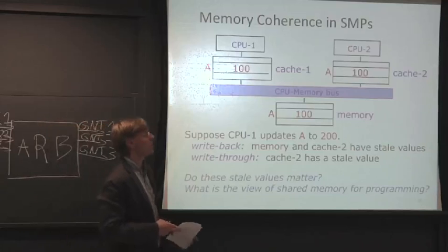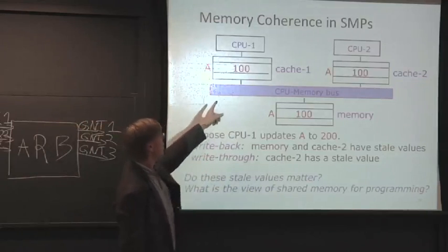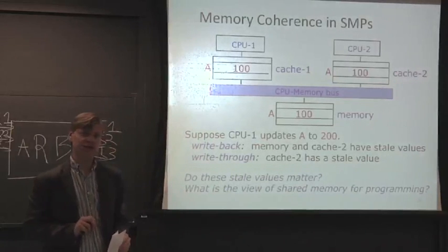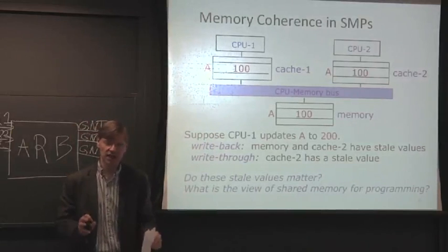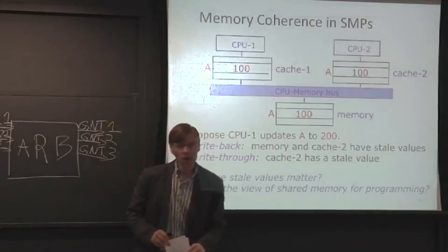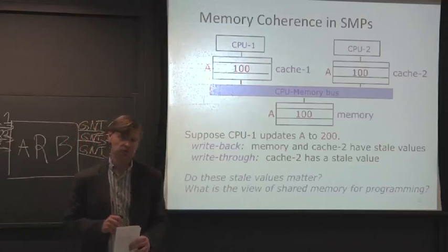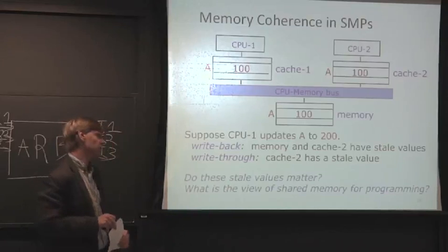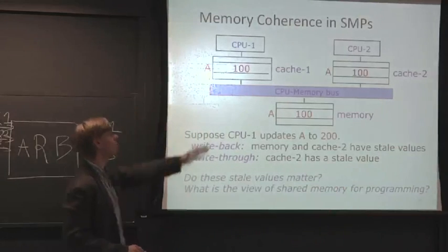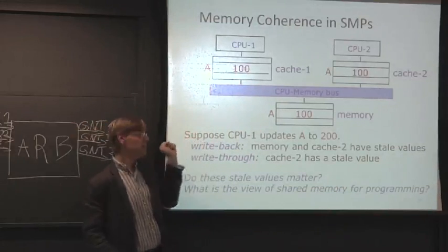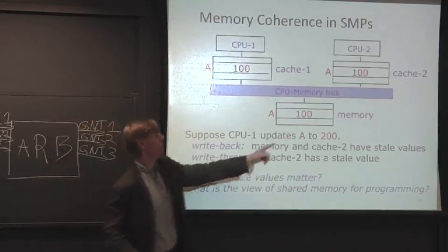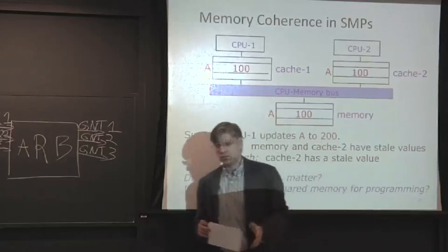Let's take a look at what happens in a simple example. At address A, we start off with everyone having the value of 100 in their respective caches and in main memory. Now suppose that CPU1 updates address A to value 200. Let's look at this in two cases. The first is in the write-back case. So CPU1 updates this to value 200, but this is a write-back cache.